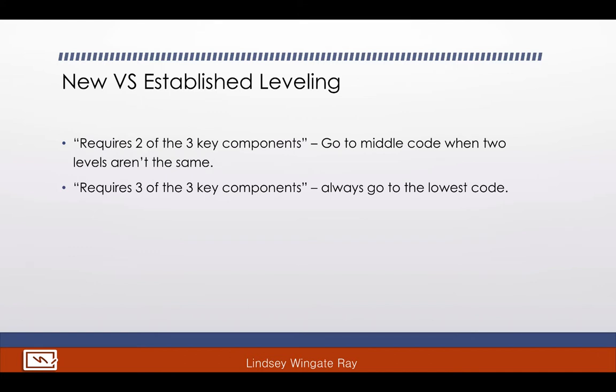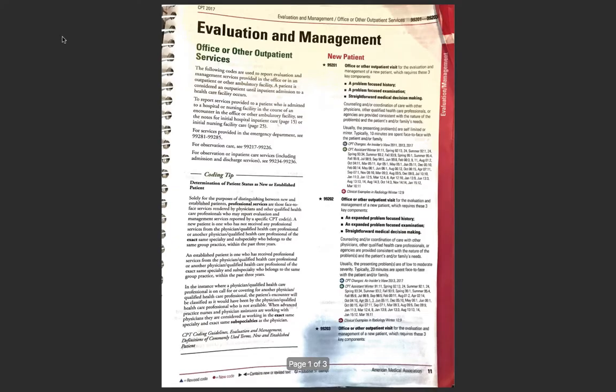Throughout the E&M section, you will see verbiage like 'requires two of the three key components' — and the key components are history, exam, and medical decision making. When it says it requires two of the three, you go to the middle code if there aren't two codes that are the same. If it says it requires three of the three components, you always go to the lowest. We're going to take office visits as an example.